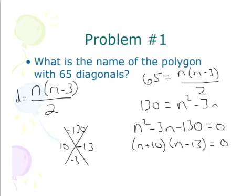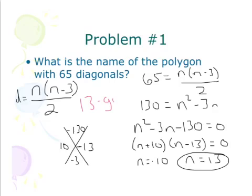So when I solve for n, I'm going to get n equals negative 10. I'll also get n equals 13. Well, I know I can't have negative 10 sides. That wouldn't make sense. But I could have 13 sides. So what we're going to call this one here is a 13-gon.